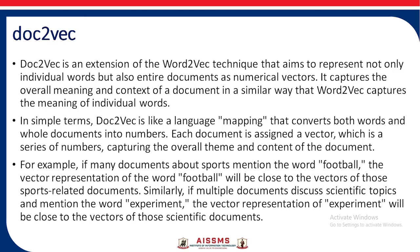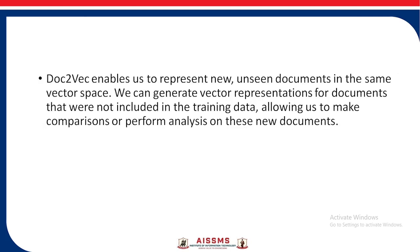For example, if many documents about sports mention the word 'football', the vector representation of 'football' will be close to the vectors of those sports-related documents. Similarly, if multiple documents discuss scientific topics and mention 'experiment', the vector of 'experiment' will be close to the vectors of those scientific documents. Doc2Vec also enables us to represent new unseen documents in the same vector space, allowing us to make comparisons and perform analysis on documents not included in the training data.